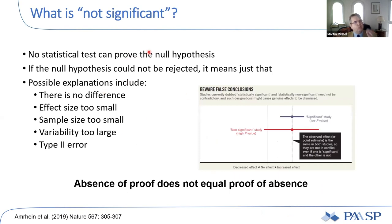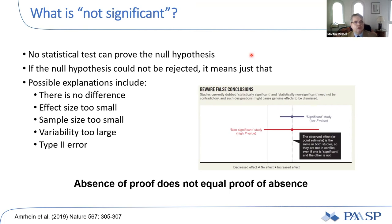If your p-value is high, what does 'not significant' mean? As in a criminal court of law, no statistical test can prove the null hypothesis. If the null hypothesis was not rejected, it means just that — and there are multiple, not mutually exclusive explanations: there may be no difference, but it could also be that the effect size was too small, the sample size too small, or the variability too large to detect it. And of course, there is always the possibility of a Type 2 error.